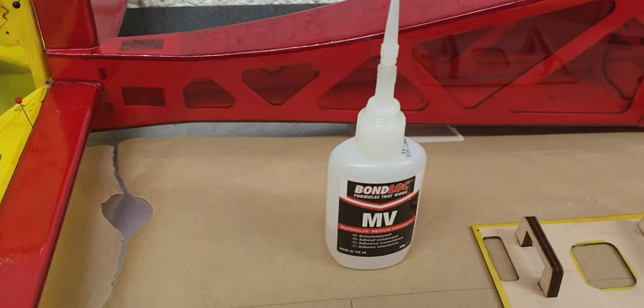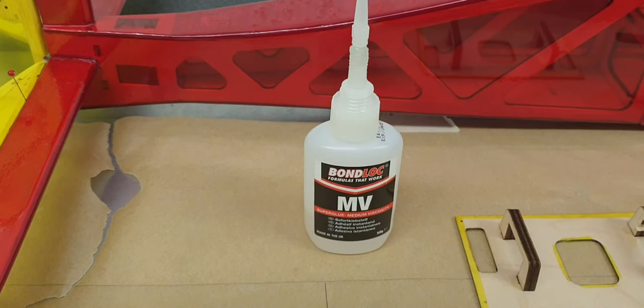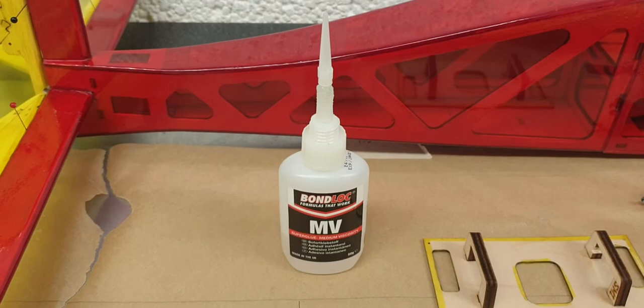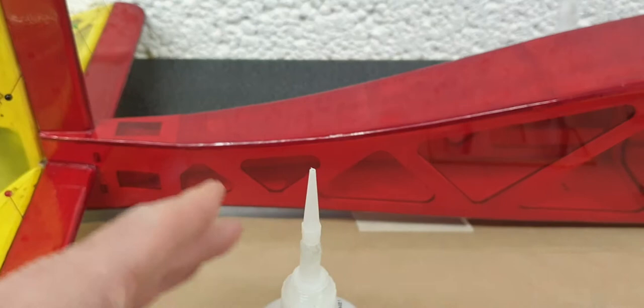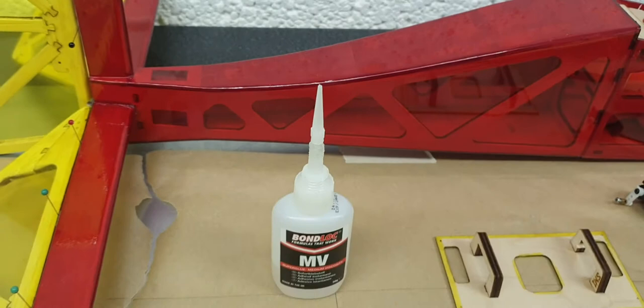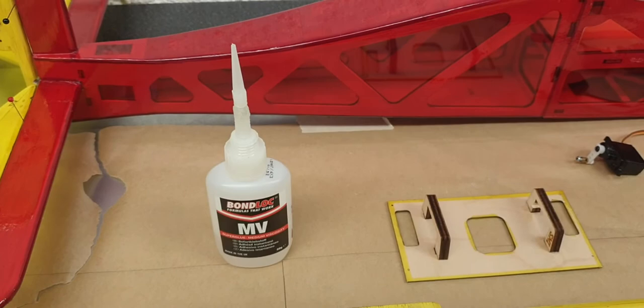The type of glue that we're going to use is the very, very thin CA type glue. This is what I'm using at the moment. It's the first time I've ever used this particular brand, but it seems as good as any other to be honest. Now, another good tip is to fit a proper dispenser onto the end of your bottle there. So you can see it's got a very, very fine tip, which helps you get the glue in exactly the right place, and rather than just using the bottle itself, it does tend to go everywhere.